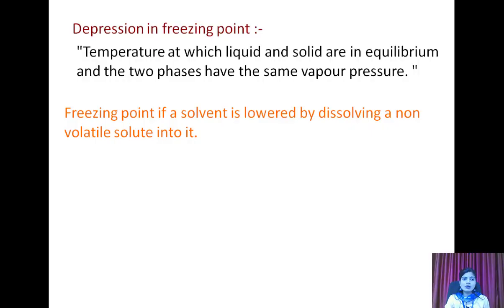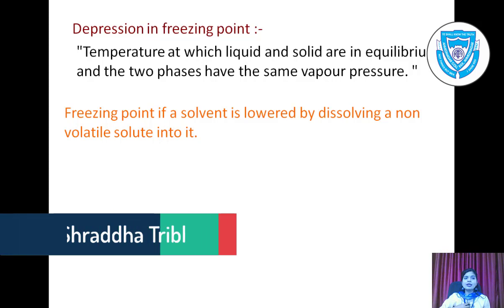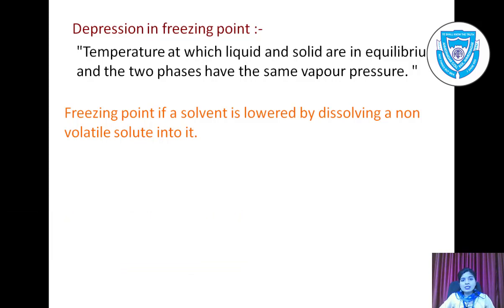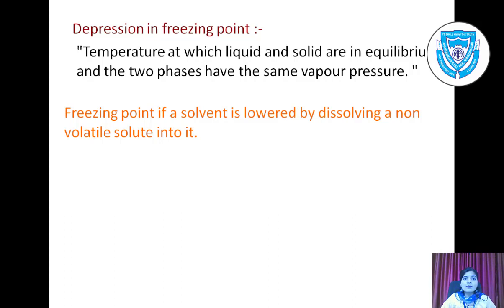Students, we are discussing colligative properties. Last lecture we saw what colligative properties are. Now we are going to see depression in freezing point. The first colligative property we saw was lowering of vapor pressure, the next was elevation in boiling point, and now we are going to see depression in freezing point. Depression means lowering — when something gets lowered, that is called depression in freezing point.